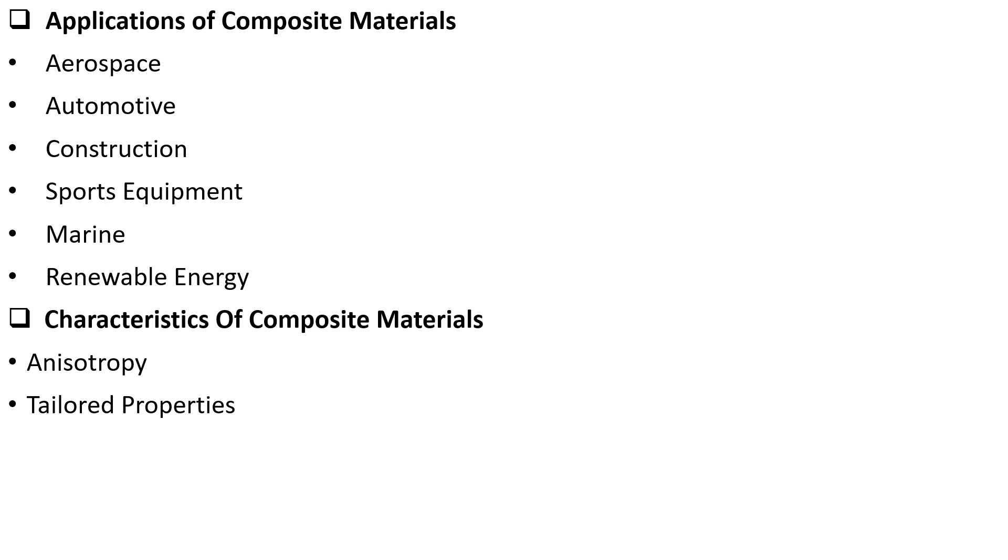Tailored properties. A significant advantage of composite materials is the ability to customize their properties to meet specific engineering needs. By adjusting the proportions and types of constituent materials, engineers can design composites that exhibit desired characteristics such as strength, stiffness, flexibility, etc.